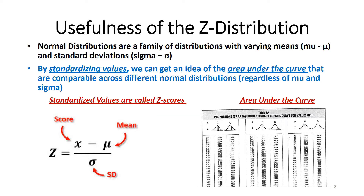That's a formula we're going to see in the next couple of lectures. I want to introduce you to this concept of standardizing values. If we look at the bottom right-hand side of this slide where it says 'area under the curve,' you'll see a brief snapshot of a table known as the proportion of area under the standard normal curve for values of Z. Because I can standardize any raw score and turn it into a Z score, I can figure out the probability of observing values that are larger than it or less than it.